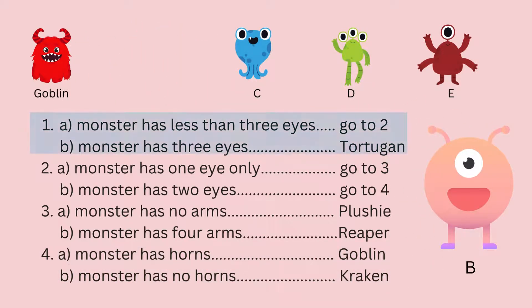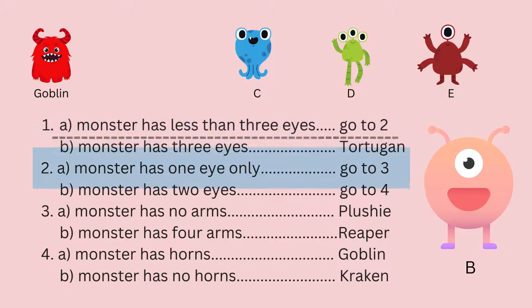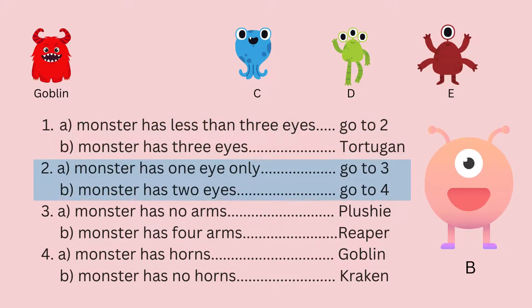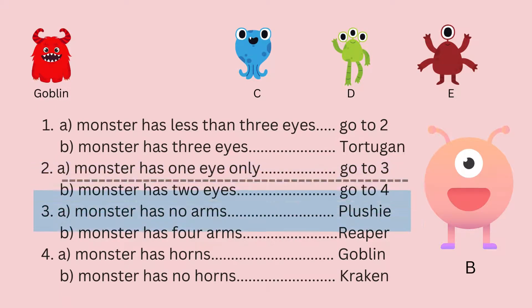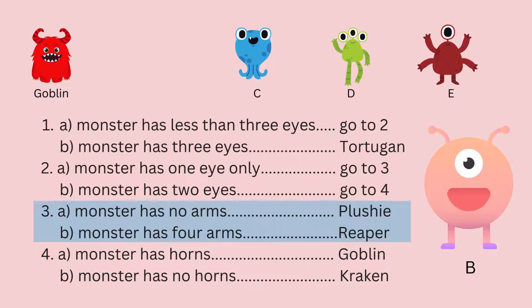Moving on to Monster B. Step one: does the monster have less than three eyes, or does it have three eyes? Monster B has less than three eyes, so we move on to step two. Step two: does the monster have one or two eyes? Monster B has one eye, so we go to step three. Step three: does the monster have no arms or four arms? Since Monster B has no arms, we can identify it as Plushie.